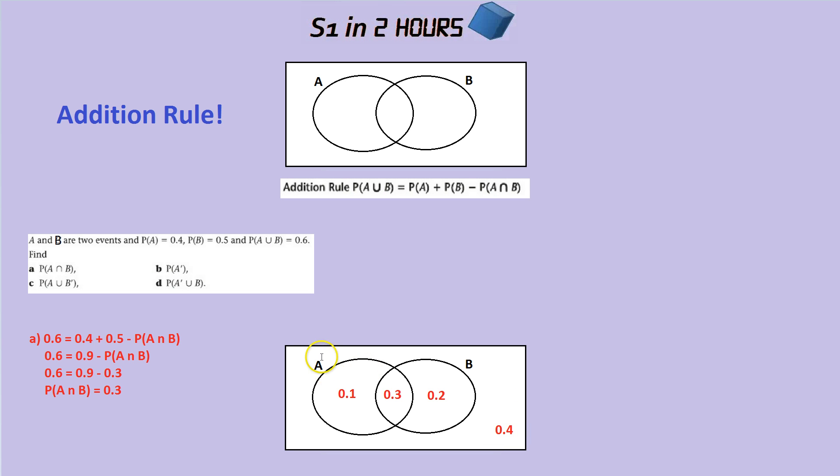This should help us to answer the question. What do they want? For part B, they want the probability of not A. It's just everything that's outside of A's bubble. So this section and this section. Both of those sections are outside of A's bubble. That would be 0.6. 0.2 plus 0.4. So B would be 0.6.